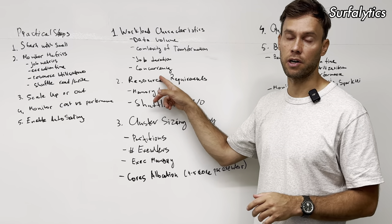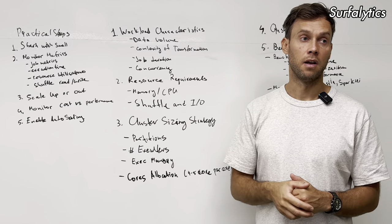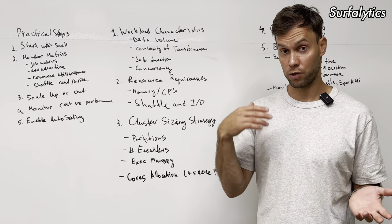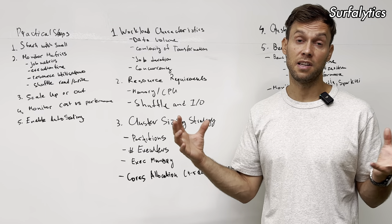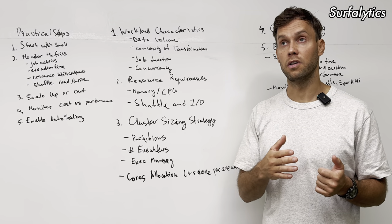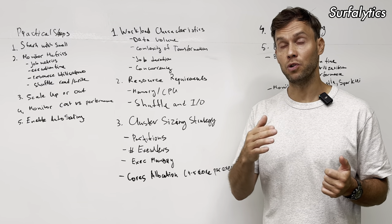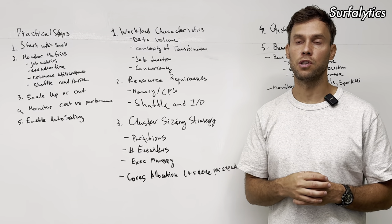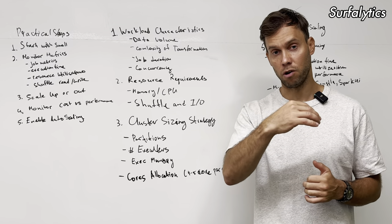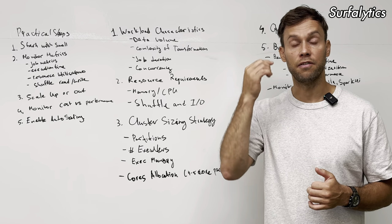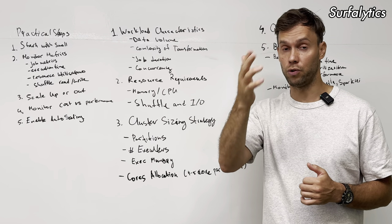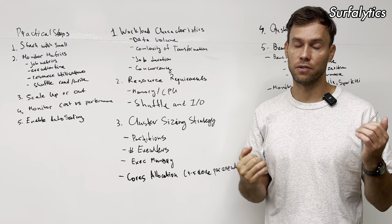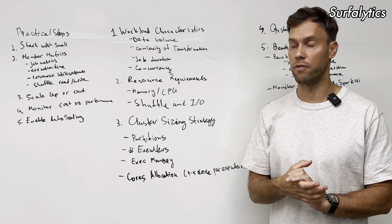Job duration and concurrency are important. For example, with Elastic MapReduce you have a single Spark cluster with a fixed number of compute instances, so compute is limited. A big question is how many jobs are running in parallel, because all jobs — all consumers — fight for resources and use them together. Running one job versus running ten jobs makes a very big difference in performance.